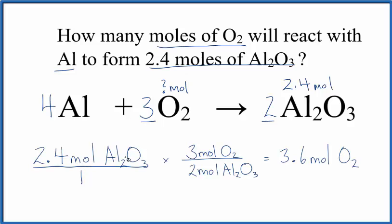We have moles of aluminum oxide on the top and the bottom here. So when we multiply and divide, they cancel out. We're left with oxygen, moles of oxygen. So 2.4 times 3 over 2, 3.6 moles of oxygen.